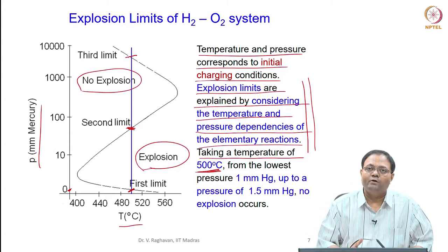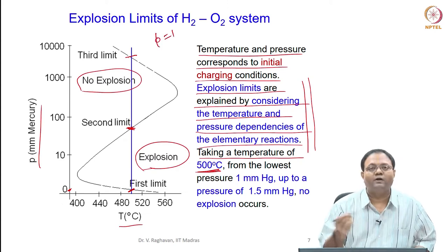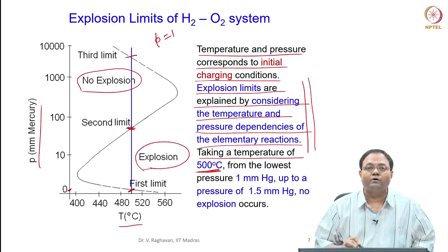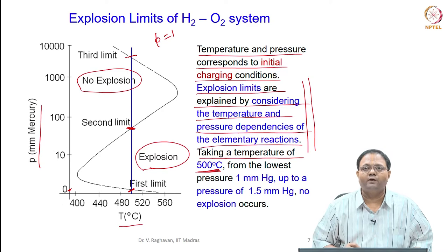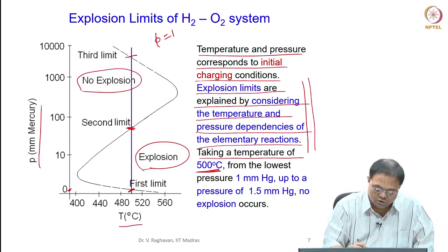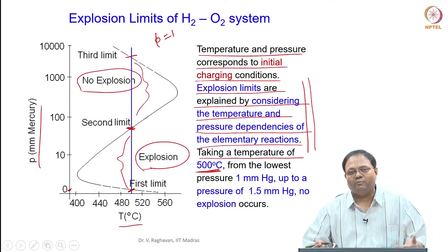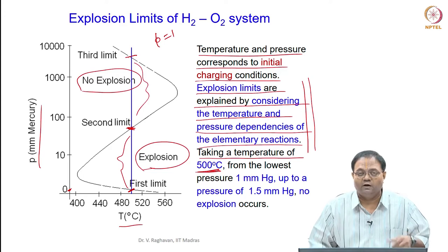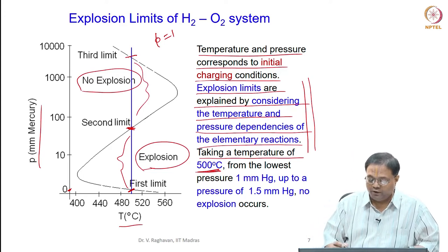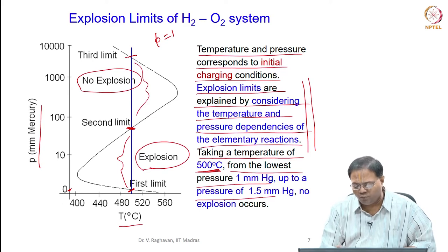How will you explain this otherwise? With only properties like pressure and temperature we cannot explain this. Because the stoichiometric mixture phi equals 1 is constant, temperature is also fixed at 500 degrees centigrade on the vertical line, and pressure I know. Why in one pressure range ignition occurs and in another range it does not cannot be explained unless we seek the help of elementary reactions and their pressure and temperature dependencies. From the lowest pressure of 1 mm mercury up to about 1.5 mm mercury, no explosion occurs.